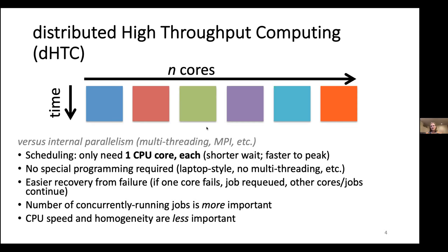There's easier recovery from failure because if one task or computer fails, jobs running elsewhere don't have to be affected. In a distributed high-throughput computing system, there's automated detection and re-queuing of failed jobs, which is part of what Condor provides. Generally, the number of concurrently running jobs is much more important than CPU speed or homogeneity. OSG is part of how you can really expand to an extreme extent the idea of running in as many places as possible.